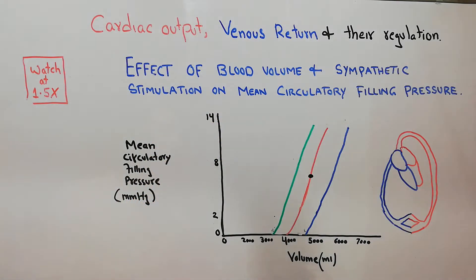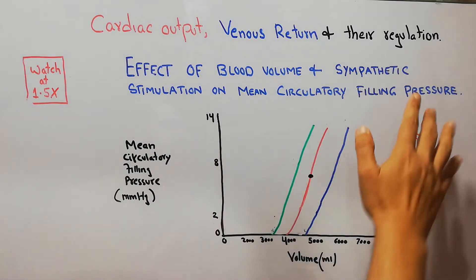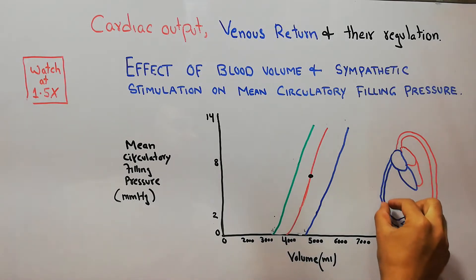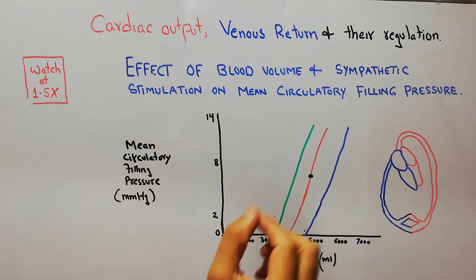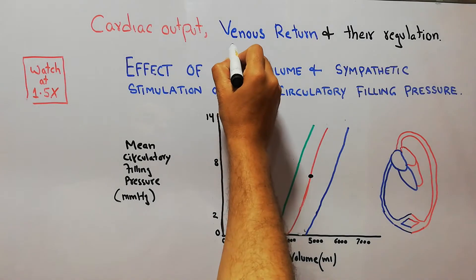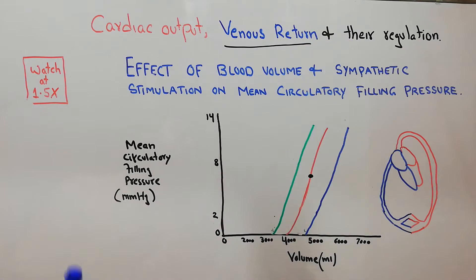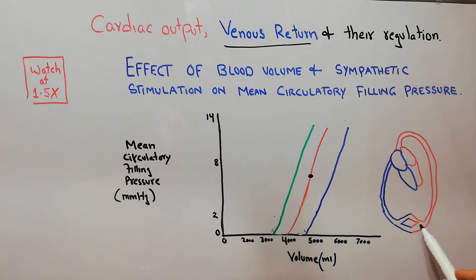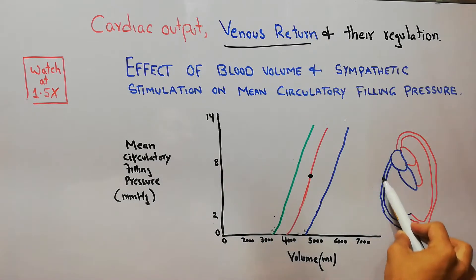The mean circulatory filling pressure helps the blood move towards the heart and is an important component of venous return — it helps blood return towards the heart.